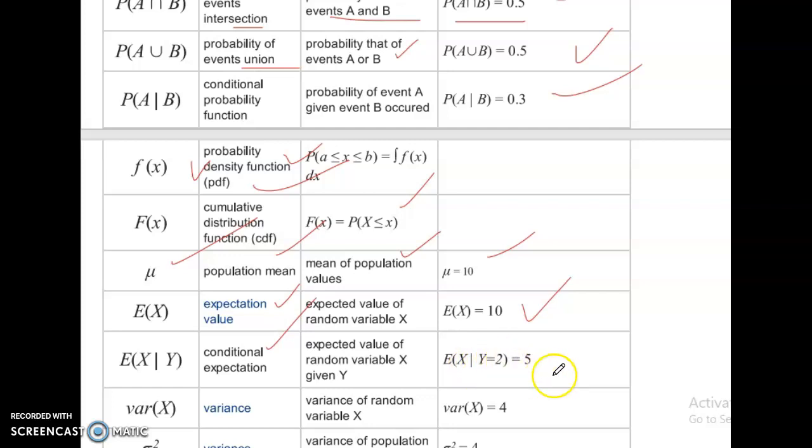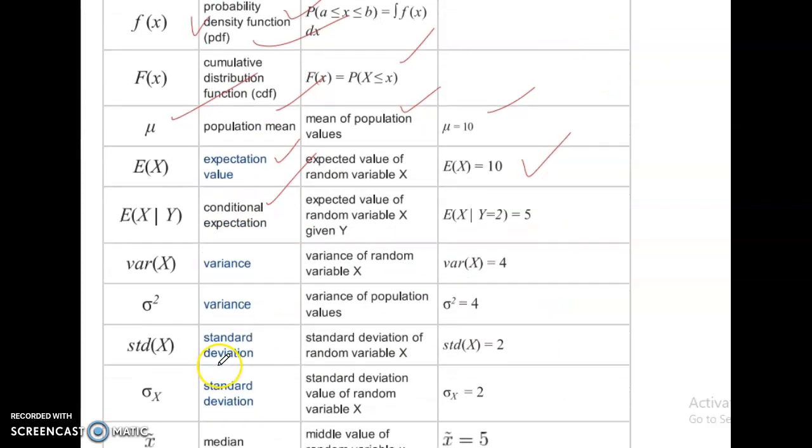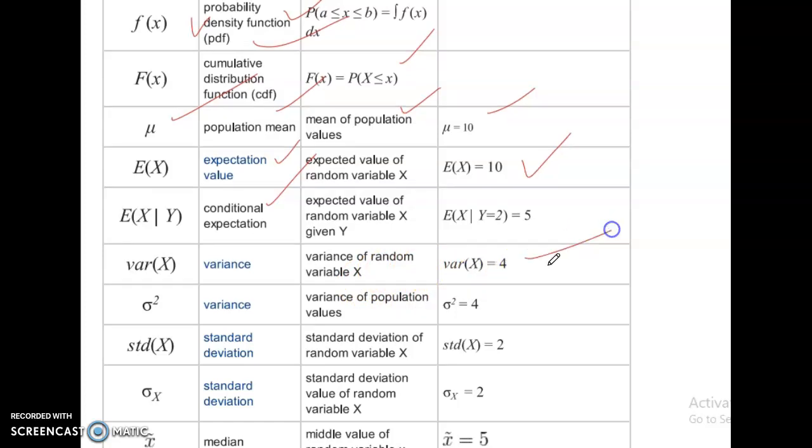Variance. Variance of random variable X. Var of X equal to 4. Sigma squared. Standard deviation of X. Standard deviation of random variable X. Standard deviation of X is equal to 2.